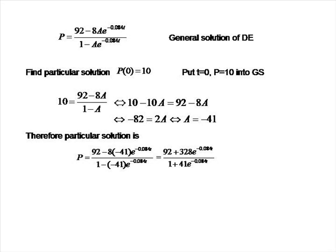Finally, let's ask what happens to p as time increases. As t tends to infinity, e^(−0.084t) goes to 0, so p tends to (92 plus 0) over (1 plus 0), which equals 92. In other words, the population of grizzly bears tends to 92 as time develops.